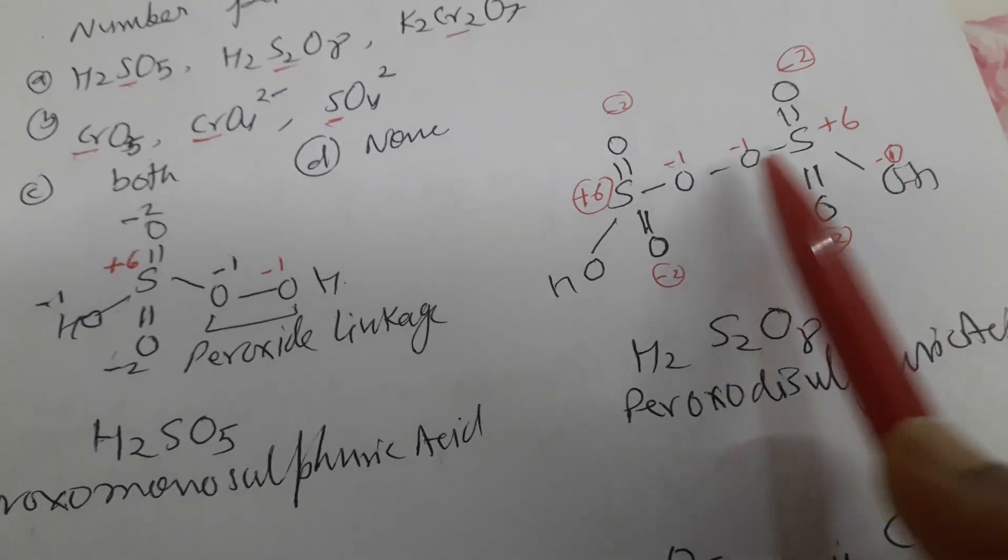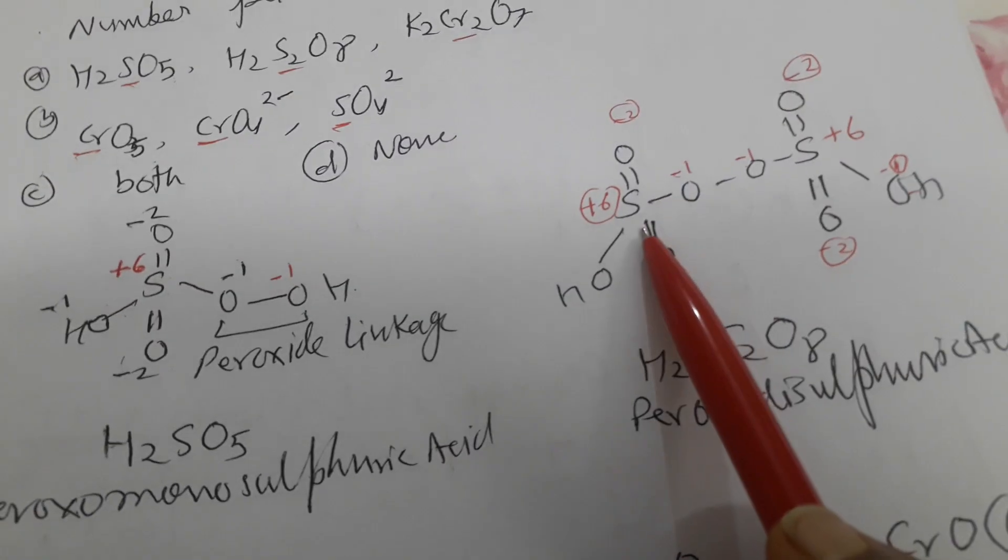In this case, this is peroxido disulfuric acid. Here also both of the sulfur having plus 6 oxidation state.